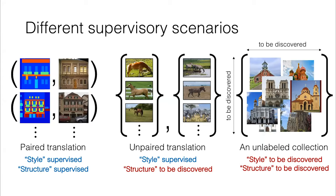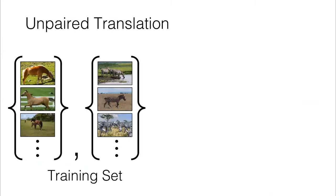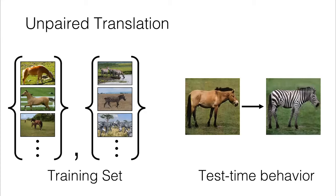This talk will discuss the second and third scenarios. Let's first start off with unpaired translation. Here, showing you an example where you're given a set of horses and a set of zebras in your training set. Now, test time, the emergent behavior that you want is a sensible translation. You want your horse to be sensibly translated into a zebra.